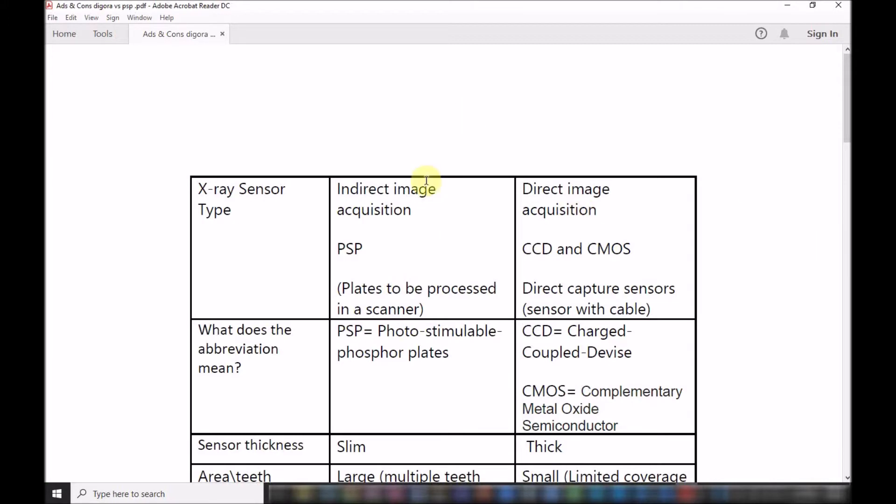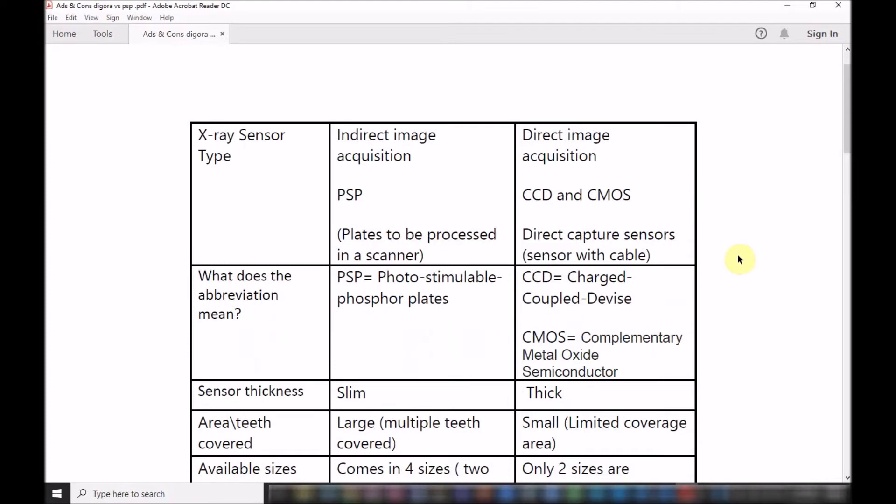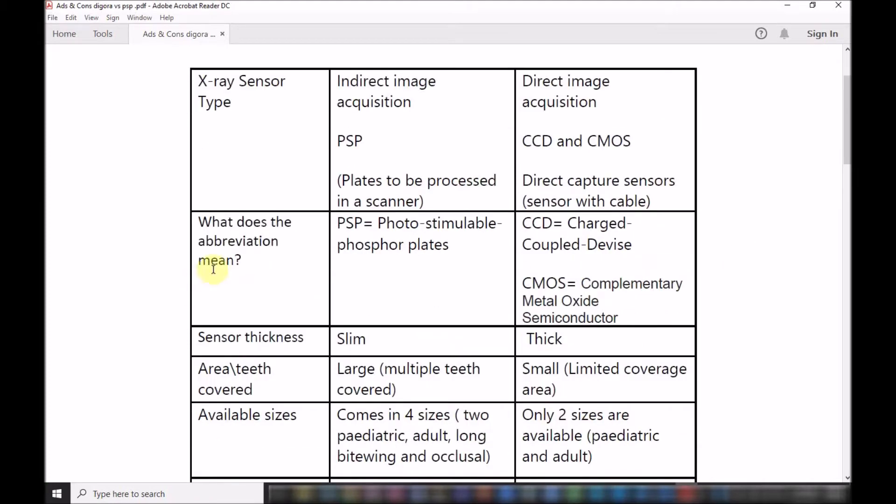What does the abbreviation mean? The PSP stands for photo-stimulable phosphor plates. The CCD stands for the charged coupled device, and the newer version of the direct image acquisition sensors is the CMOS.